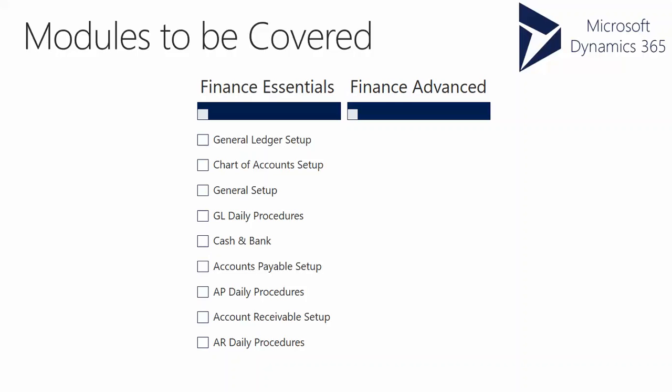When it comes to Finance Advanced, we'll be talking about budgeting — how to configure budgets and manage budget register entries. Commitment accounting covers purchase requisitions, purchase orders, encumbrances, how to implement encumbrances, and post and pre-encumbrances.